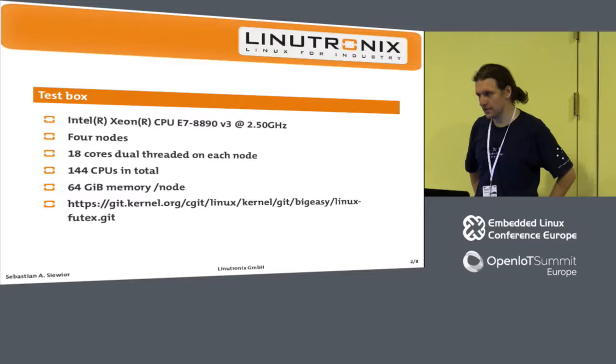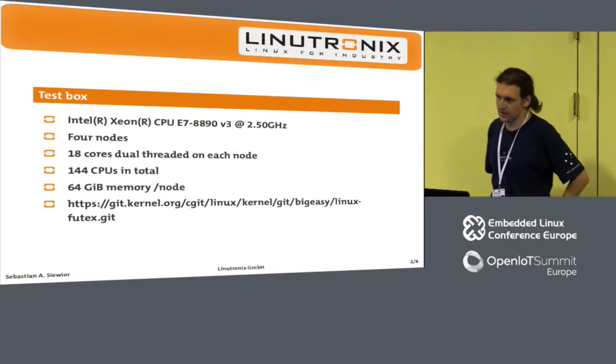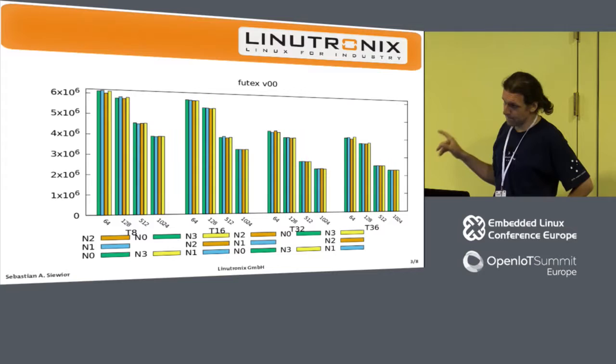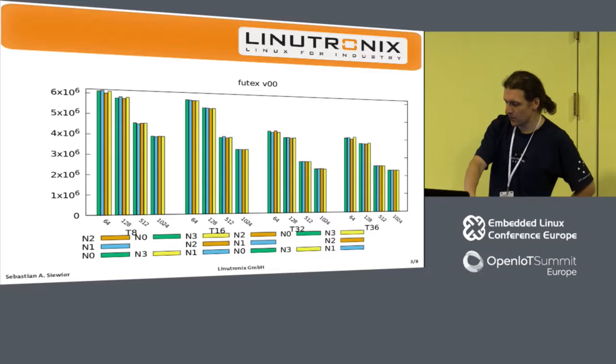We extended it to use an N parameter to specify the NUMA node you run it on. So this is version zero — this is state-of-the-art mainline as is. On the left side you have 64, 128, 512, 1024 — that's the number of futexes.